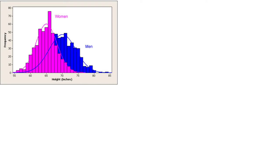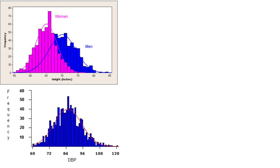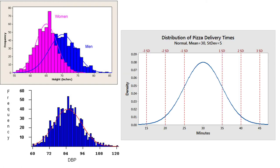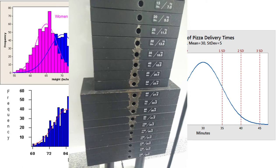Many things in life conform to a normal distribution: average height, blood pressure, pizza delivery times, IQ. If you test enough people, virtually everything will conform to a normal distribution. One favorite example is the weight selected during strength training.